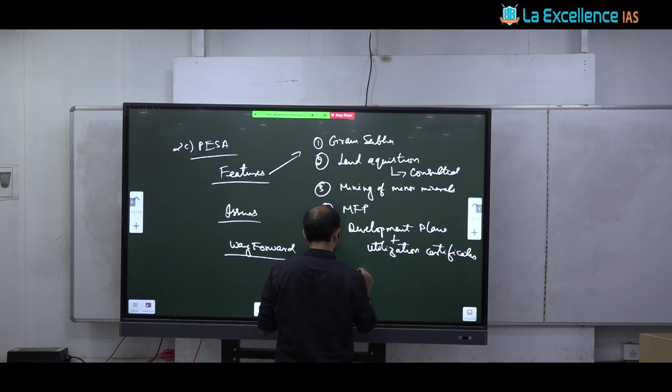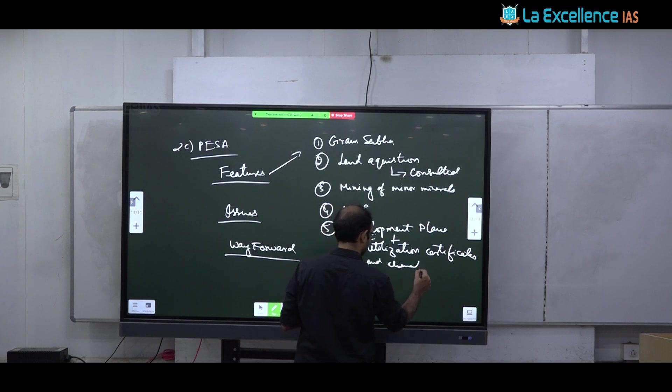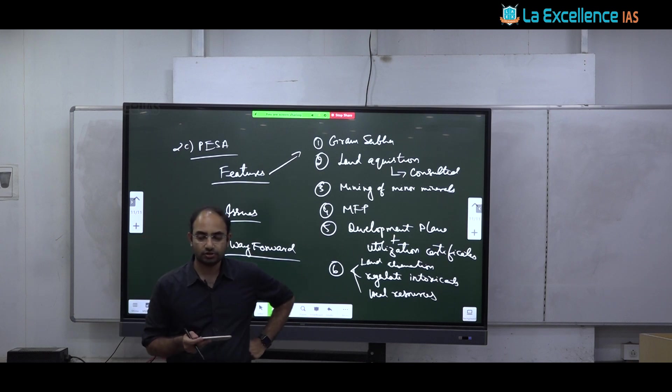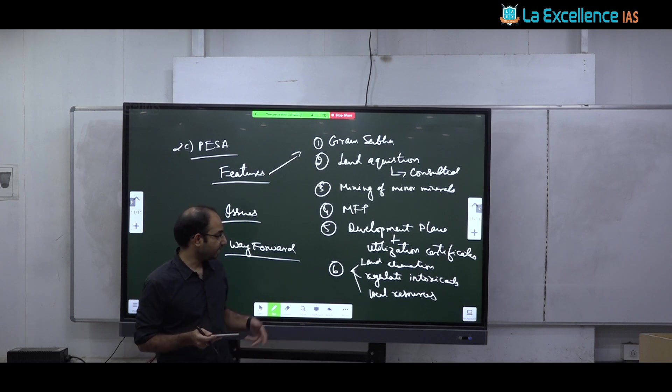Grama Sabha also is given roles to make development plans. And Grama Sabha must authenticate utilization certificates that somebody has done some project and he has to be paid. Then the certificates must be approved by Grama Sabha. They are also given powers over many areas, like for example, they have right to prevent land alienation. They can regulate the sale of intoxicants, regulate money lending and they can manage local resources like water bodies, grazing areas, sacred groves all of this.